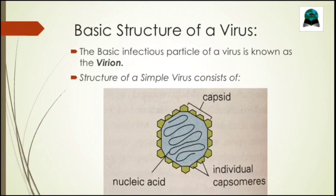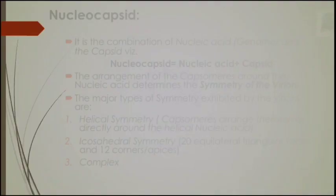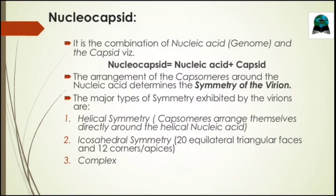The basic infectious particle of a virus is known as the virion. The virion or viral particle must consist of nucleic acid, capsid, envelope, and glycoprotein spikes. The structure of a simple virus consists of a nucleic acid — either DNA or RNA, single-stranded or double-stranded — enclosed in a protein shell called the capsid, which is composed of varying numbers of protein subunits known as capsomeres. The combination of genome or nucleic acid with the capsid is called the nucleocapsid. The capsid is arranged symmetrically around the nucleic acid core.